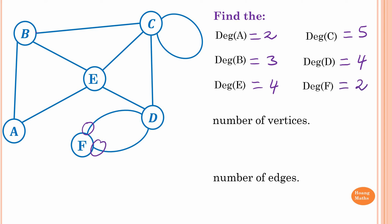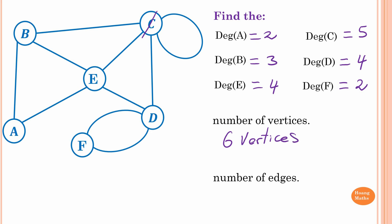The number of vertices is one, two, three, four, five, six — so six vertices. For the number of edges, counting the routes: one, two, three, four, five, six, seven, eight, nine — and this loop counts as one — so ten edges in total.